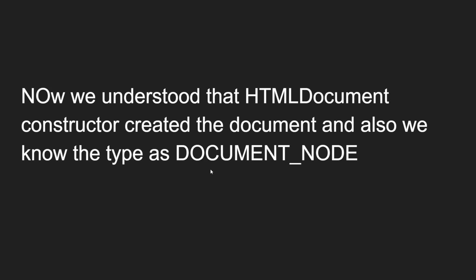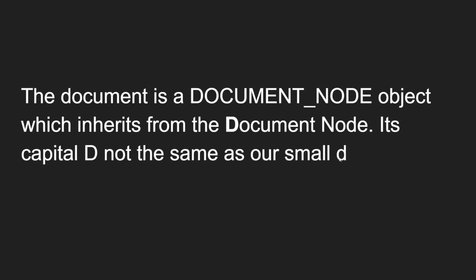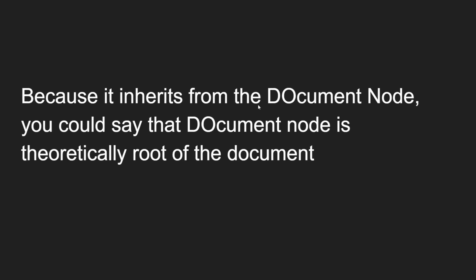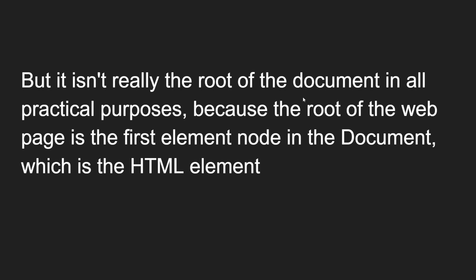So the HTMLDocument constructor function created this document object, and the type of this document object is Document node. The small-d document is a Document node object which inherits from capital-D Document. Because it inherits from the Document node, you could say that the Document node is theoretically the root of the document. However, it isn't really the root in all practical purposes, because the practical root of a web page is the first element node - which is the HTML element.